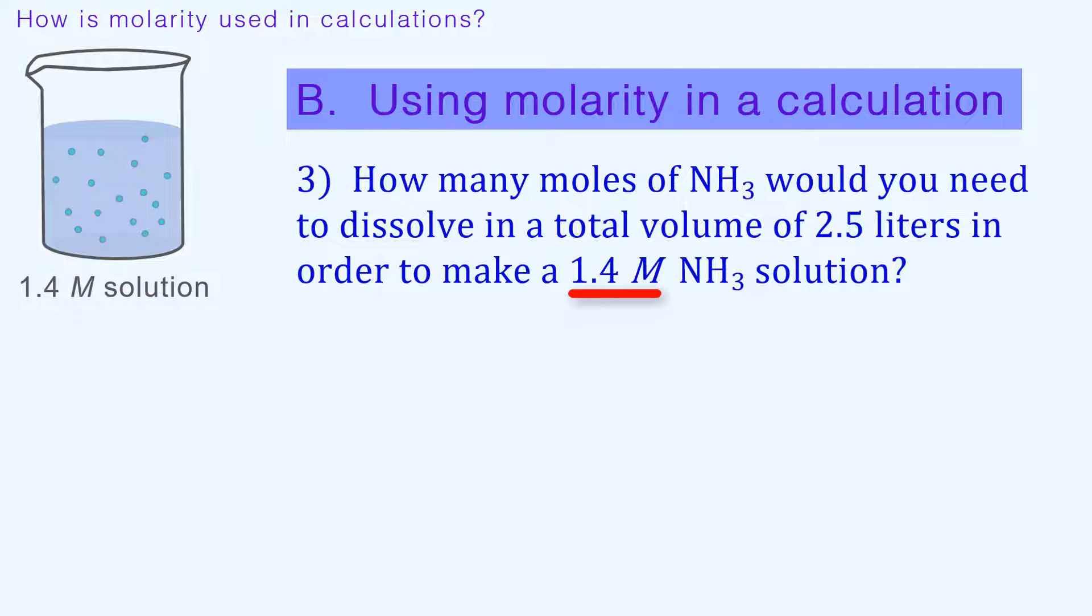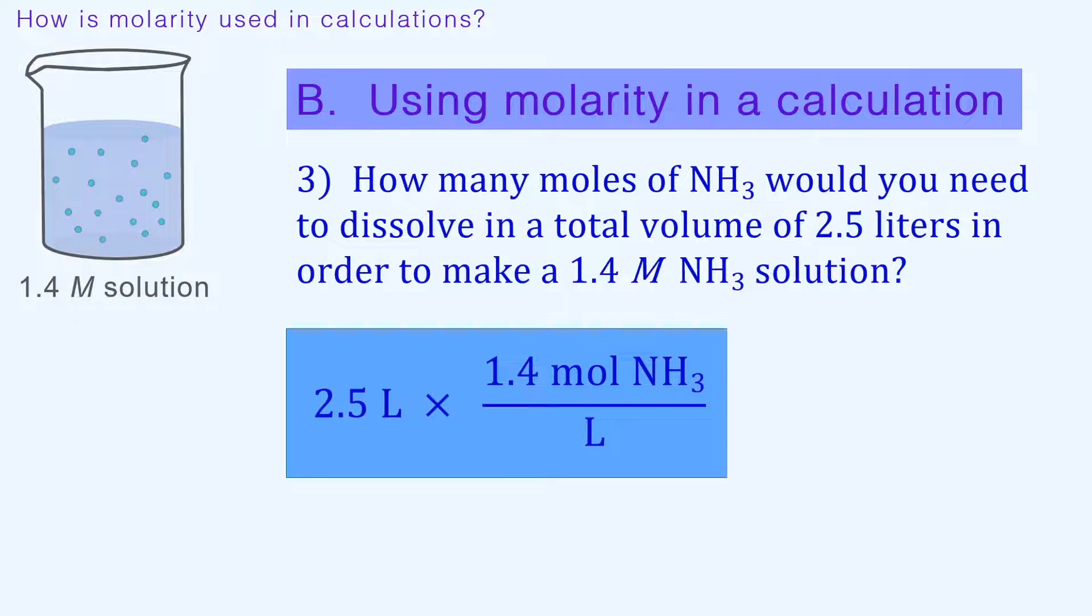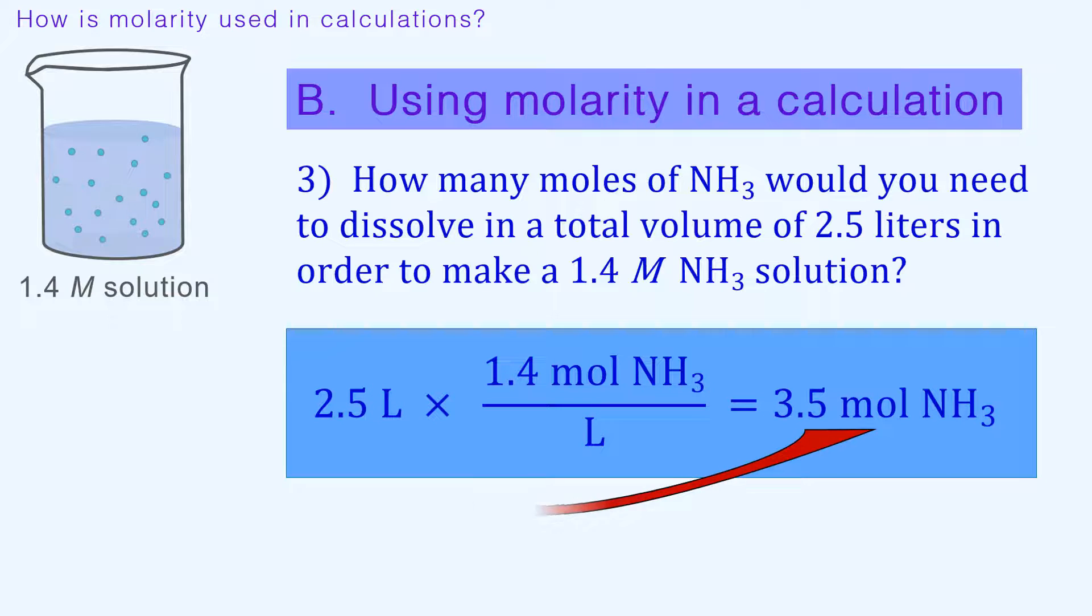It gives us the unit relationship between moles and liters. So we begin with 2.5 liters and multiply by the desired mole to liter relationship given. Liters cancel and we are left with 3.5 moles of ammonia. If you dissolve 3.5 moles of NH3 in enough water to make a 2.5 liter solution, you will have a 1.4 molar solution of ammonia.